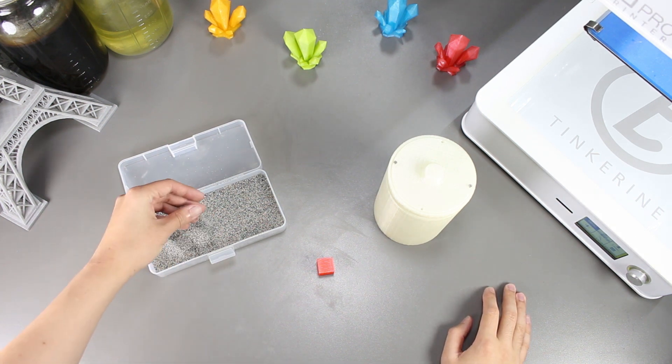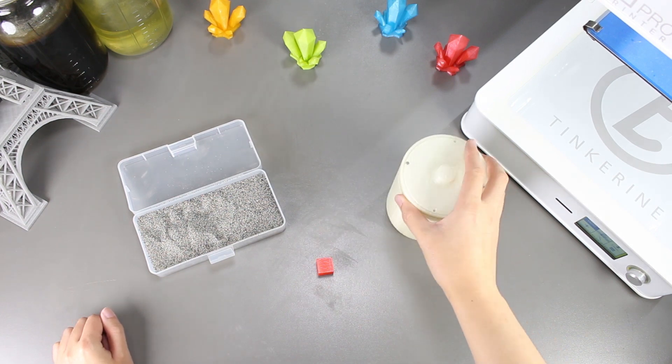Welcome to another episode of Tinkering Experiments. In this episode, we will be trying to smooth out our PLA with our rock tumbler once again.